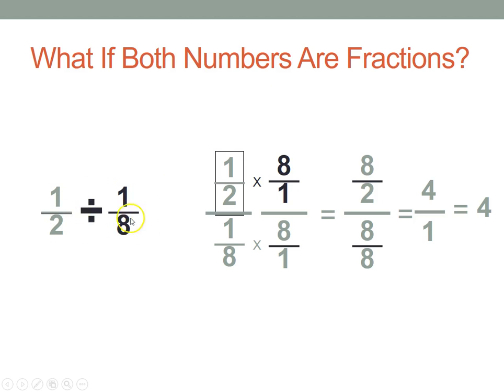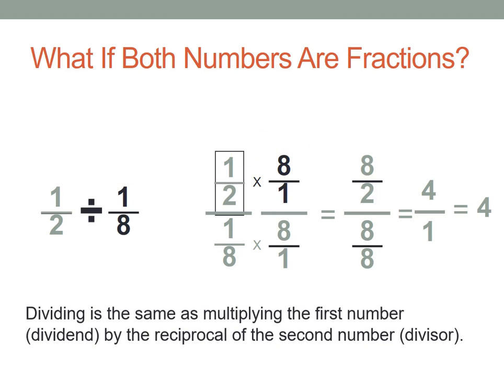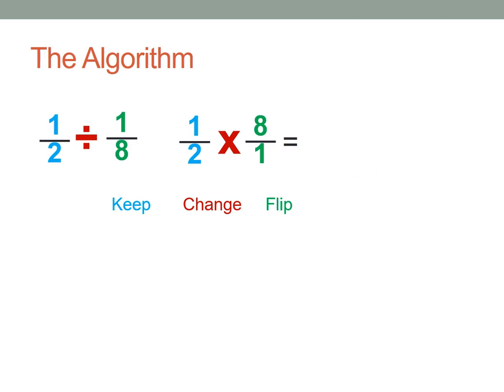And now let's go back to this example. So, I want to highlight this. Dividing by a number is the same as multiplying by its reciprocal. See, I haven't changed that. We know the answer to this is 4, we know the answer to this is 4. The only thing I've changed is instead of dividing by a number I'm multiplying by its reciprocal. And that, so dividing is the same as multiplying the first number which is the dividend by the reciprocal of the second number which is the divisor.